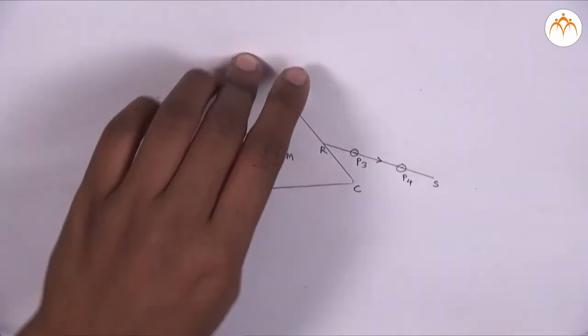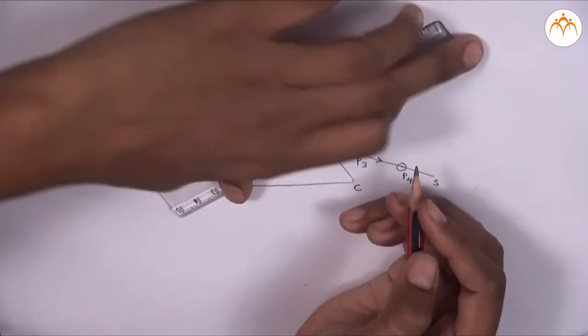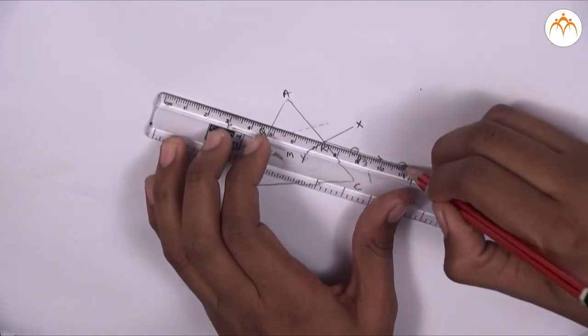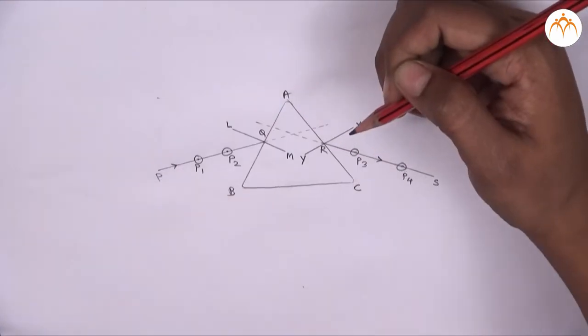We draw a normal or perpendicular on side AC through point R. Extend ray PQ and ray SR on opposite sides to intersect each other at point K.